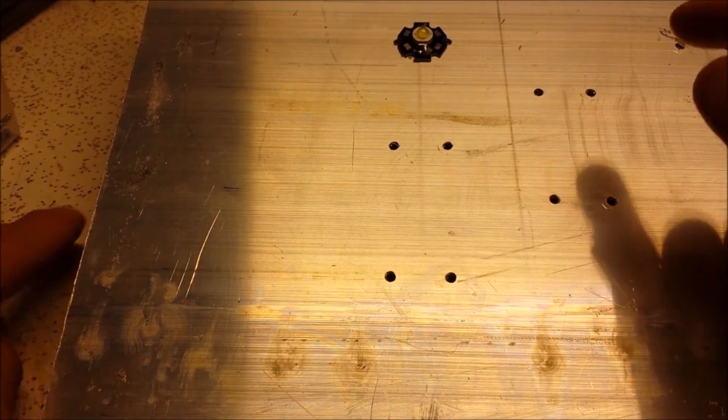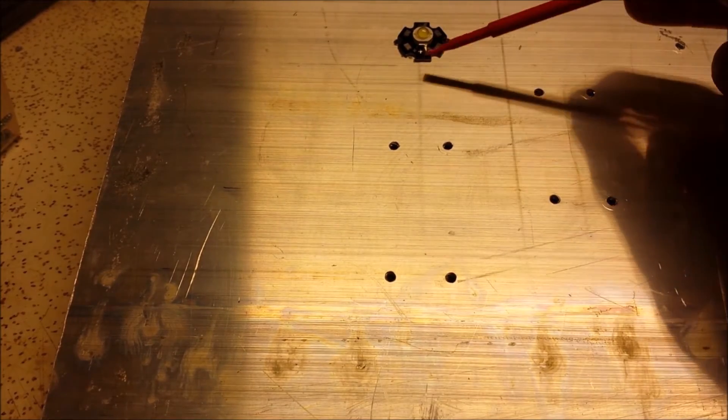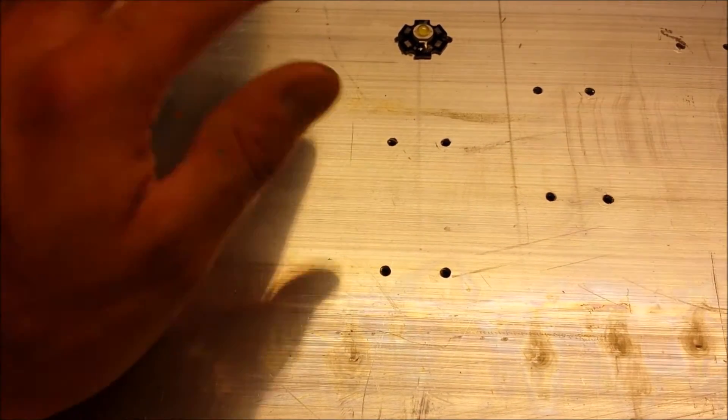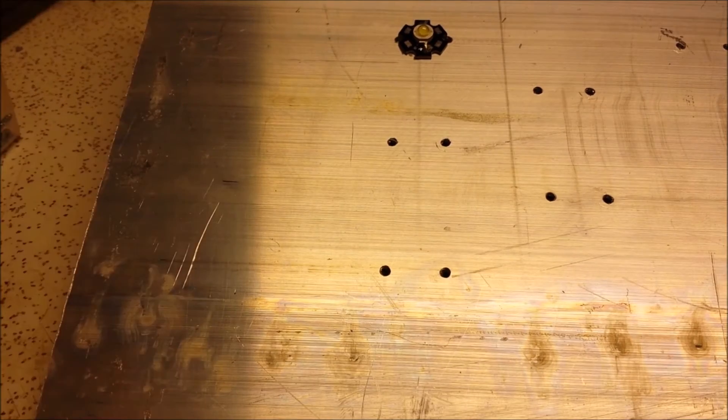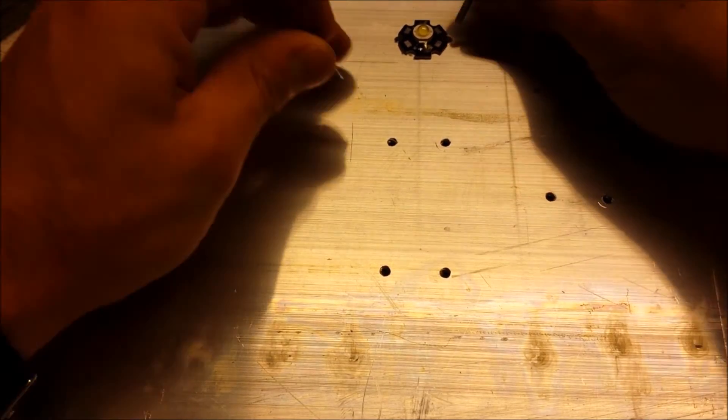And then now just orientate the chip here. Now I'm using my old one as a template. So on that one I actually have positive facing down, because remember the white and the blues get wired together. So now I can take my screws.